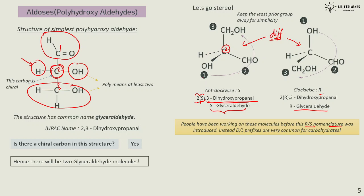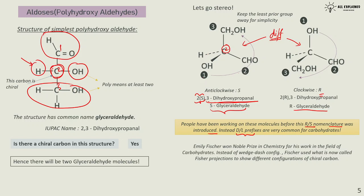Before RS nomenclature was introduced, DL prefixes were very common for carbohydrates, especially when Emil Fischer was working on these molecules. Fischer won the Nobel Prize in Chemistry for his work in carbohydrates. Instead of wedge-dash configurations, Fischer used what are now called Fischer projections to represent these different molecules with the same connectivity.